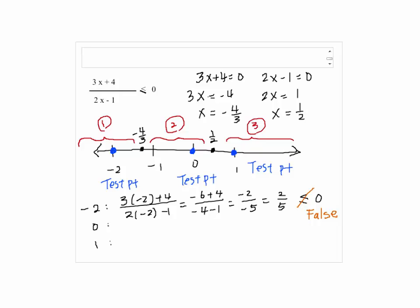The second test point, which is 0, gives us 3 times 0 plus 4 over 2 times 0 minus 1, which is 4 over negative 1, which is negative 4. That is less than or equal to 0, so that gives us a true statement.